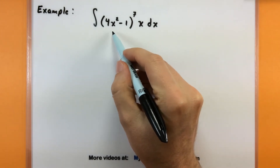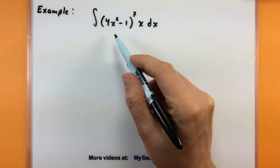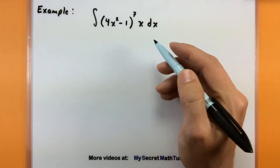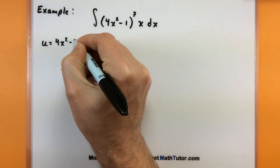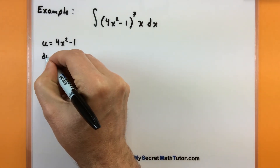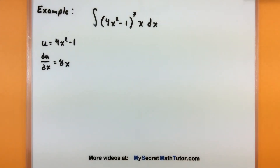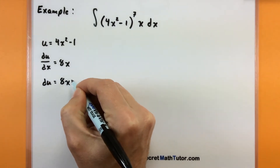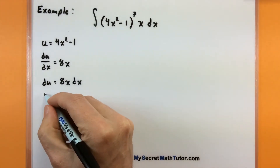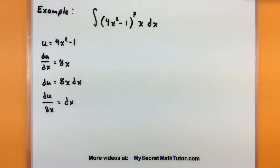Looking at this next integral, I'm looking for a piece like 4x squared, because if I think about its derivative, it looks like an x — sure enough, it's 8x, but close enough. So let u equal 4x squared minus 1. Next step: take the derivative of u. We get 8x — the derivative of the constant goes to zero. Now let's solve for dx: multiply both sides by dx, then divide by 8x. Now I have dx all by itself.